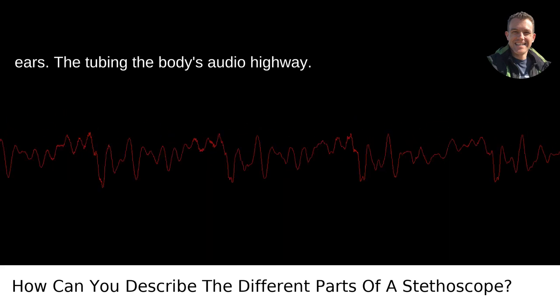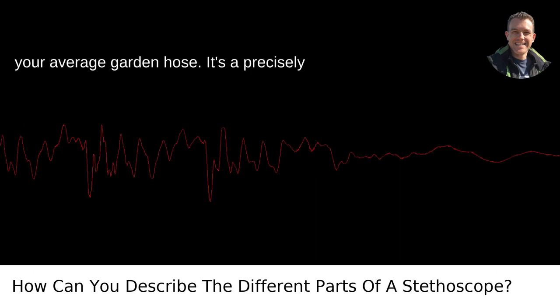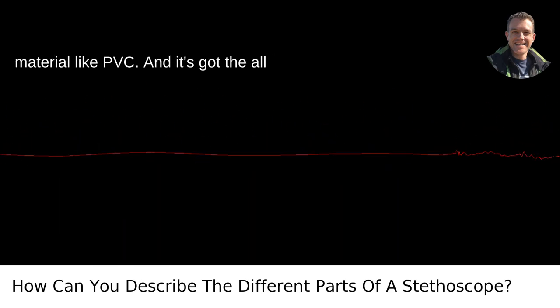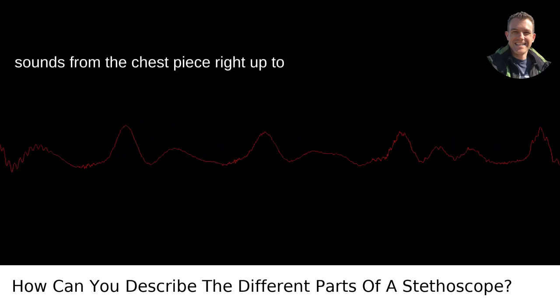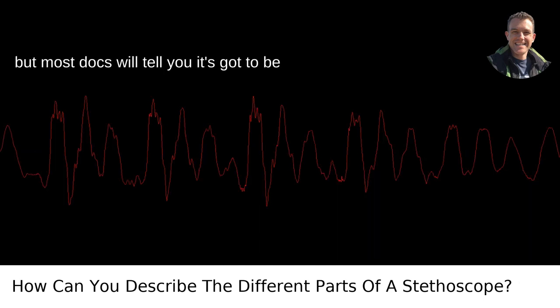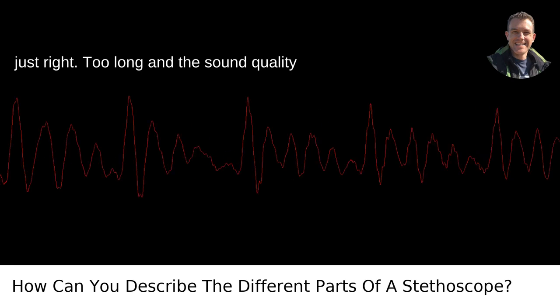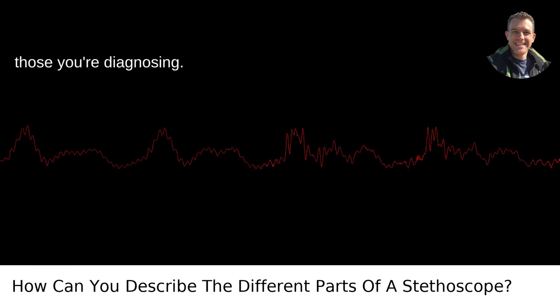The tubing, the body's audio highway. Next up, we've got the tubing. This isn't your average garden hose. It's a precisely designed tube, often made of a flexible material like PVC, and it's got the all-important job of carrying the body's sounds from the chest piece right up to those eartips. The tubing length varies, but most docs will tell you it's got to be just right. Too long and the sound quality drops. Too short and you're getting a little too up close and personal with those you're diagnosing.